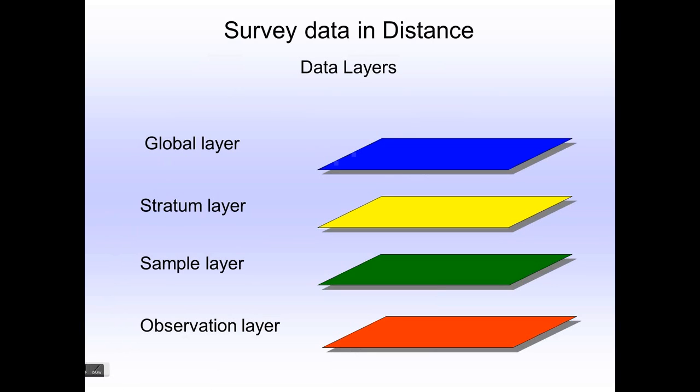A bit more about the internal structure of how Distance holds onto your data in a distance project. The data are stored in layers. A typical distance project has information in four layers. The topmost layer, these layers are hierarchical, is called the global layer, and it contains information about your study area. Your study area may be broken down into regions or strata. Each of those regions or strata will have points or lines associated with them, and so we call those samples. That information lives in the sample layer. How many transects did you have? What were those transects named? How long were each of those transects? That information lives in the sample layer.